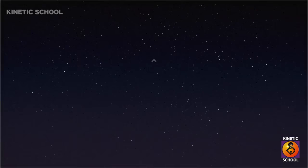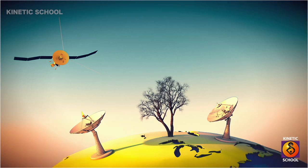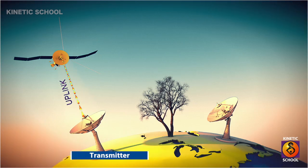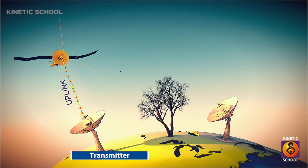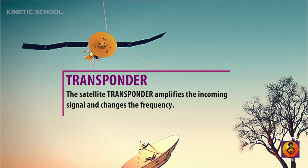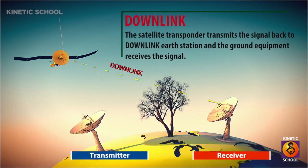Satellite communication consists of three main components: uplink, satellite transponder, and downlink. An uplink Earth station or other ground equipment transmits the desired signal to the satellite. The satellite transponder amplifies the incoming signal and changes the frequency. The satellite transponder then transmits the signal back to the downlink Earth station, where the ground equipment receives the signal.